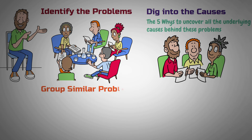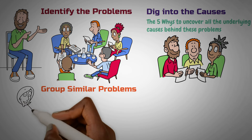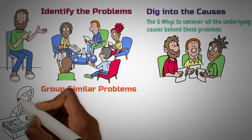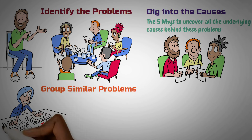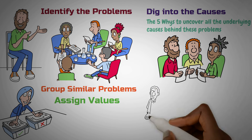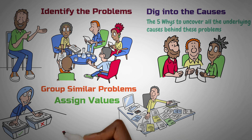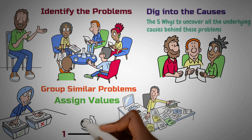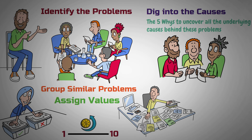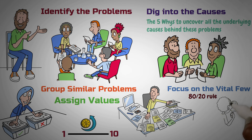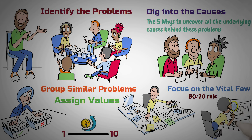Third, group similar problems: if some causes fall into similar categories, group them together — this can streamline your decision-making by allowing you to address multiple issues with one solution. Fourth, assign values: evaluate the impact of each problem on the business using a simple scale of 1 to 10, or assign actual monetary values to gauge their importance. Fifth, focus on the vital few: concentrate on the top 20% of problems that have the most significant impact on the business. By prioritizing these critical issues, you can make a substantial difference.